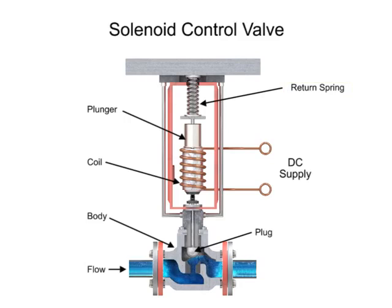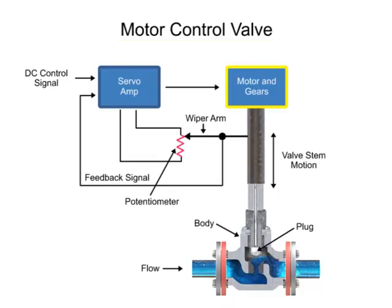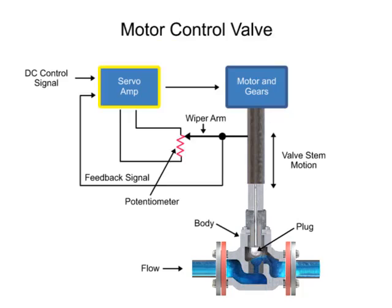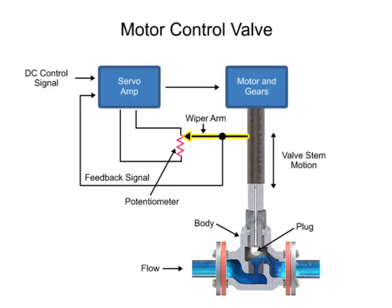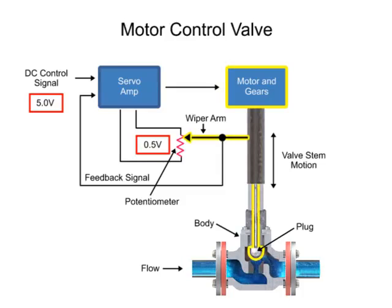Another method for variable valve positioning uses a motor and is referred to as proportional control mode. Using a gear motor attached to the valve stem, a servo amplifier provides a DC control signal that moves the valve to the desired position. Feedback is achieved with a wiper arm attached to the valve stem that sends a signal back to the servo amplifier where the position is monitored. The servo amplifier drives the motor until the control signal is equal to the feedback signal.